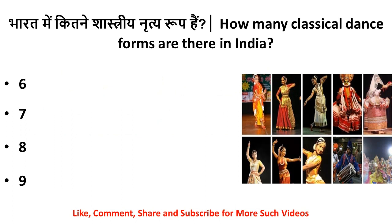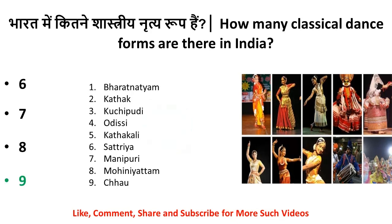How many classical dance forms are there in India? There are 9 classical dance forms in India. The names are Bharatnatyam, Kathak, Kuchipudi, Odissi, Kathakali, Satriya, Manipuri, Mohiniattam and Chhau.